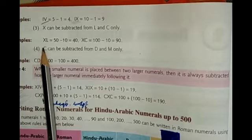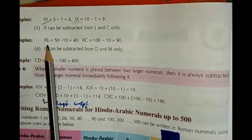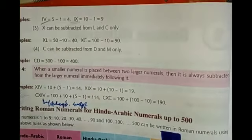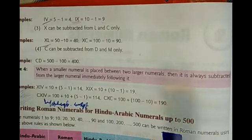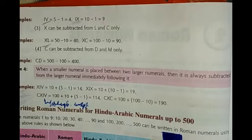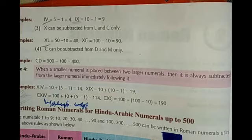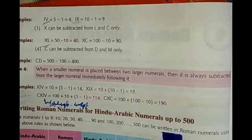For example: XL means 50 minus 10, which equals 40. So we write 40 in Roman Numerals as XL. Also, C can be subtracted from D and M only — C cannot be subtracted from any other numeral.